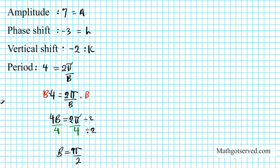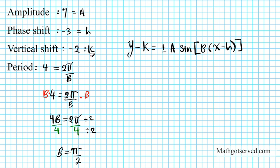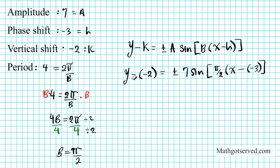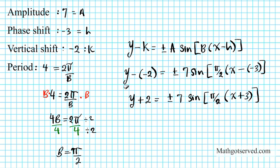Using all this information, let's write down the equation of the sine curve. The formula is y minus k equals plus or minus a sine bracket b times x minus h. Plugging in: y minus k, where k is negative 2, equals plus or minus a, which is 7, sine bracket b which is π over 2, times x minus h, where h is negative 3. Simplifying, minus times minus becomes plus, so we get y plus 2 equals plus or minus 7 sine bracket π over 2 times x plus 3.